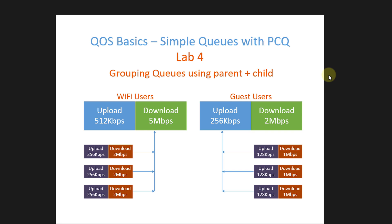Hello everyone, welcome back to another tutorial. I'm going to show you another way of grouping queues using the parent-child method like what we did in the first two tutorials. We're going to configure two groups: one for Wi-Fi users and one for guests, with specific bandwidth limits set on the parent queue and child queues. We'll do the same for guests but with different bandwidth limits.